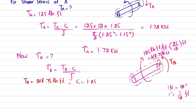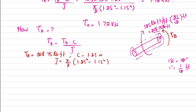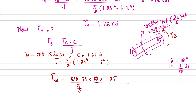c is again the maximum distance from center, which is 1.25 inches, and J = (π/2)(1.25⁴ − 1.15⁴). Substituting: τ_B = (218.75 × 12 × 1.25) / [(π/2)(1.25⁴ − 1.15⁴)]. Solving gives shear stress at point B = 3.02 ksi.